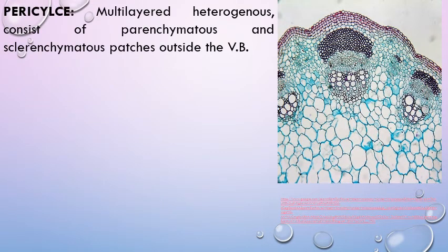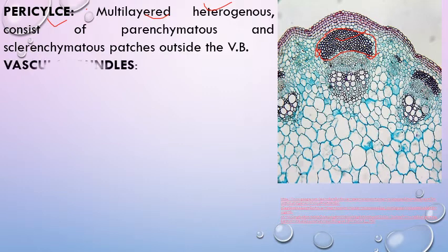Next comes the pericycle, which is multi-layered — made up of more than one layer. This region is made up of sclerenchymatous cells. It is heterogeneous, meaning it contains both parenchymatous cells and sclerenchymatous cells, but mostly sclerenchymatous cells which have thickenings. The pericycle is present just above the vascular bundle — above the phloem.